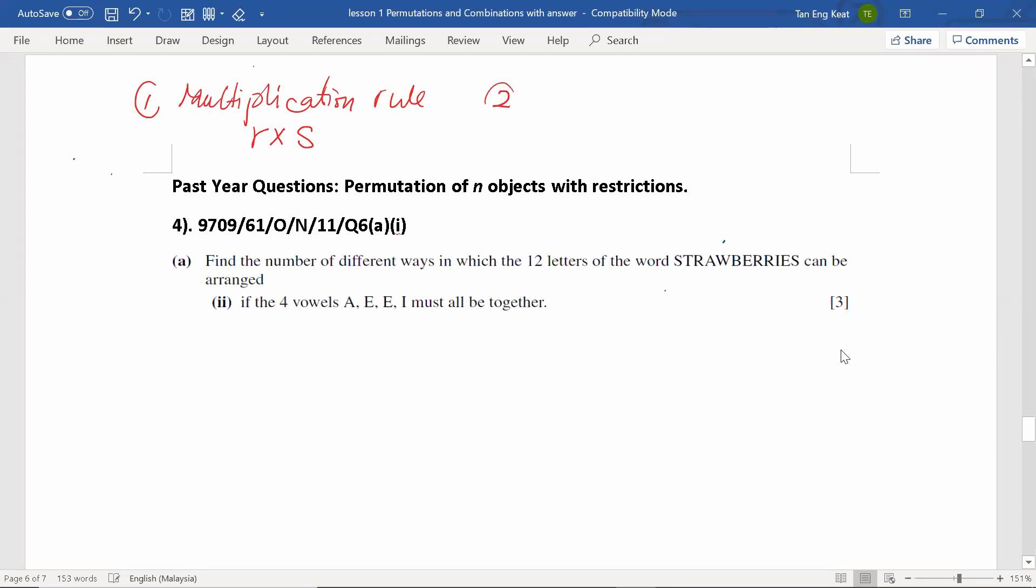Second, arranging n distinct objects which are not all different. And the formula is this. Now, let us discuss permutation of n objects with restrictions. Based on my analysis, one particular restriction the past year questions like to ask is arranging some objects together.